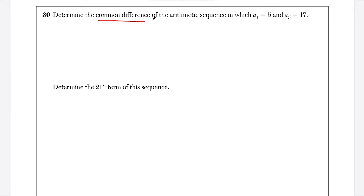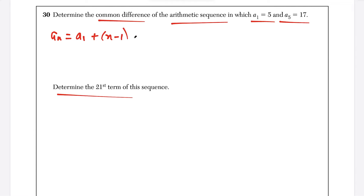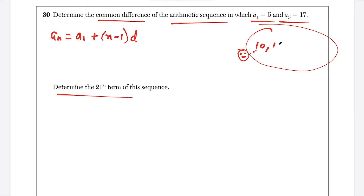Question 30: determine the common difference of the arithmetic sequence where a sub 1 equals 5 and a sub 5 equals 17, then find the 21st term. The formula for arithmetic sequences from the reference page is: a sub n equals a sub 1 plus (n minus 1) times d, where d is the common difference. An arithmetic sequence is one where you add the same number each time to get from one term to the next. For example, 10, 16, 22, 28 — the common difference is 6.